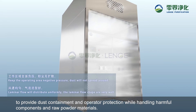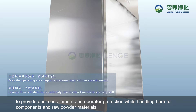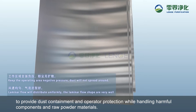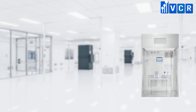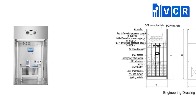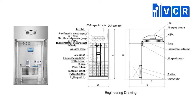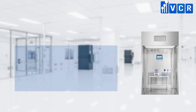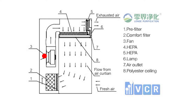The aim is to provide dust containment and operator protection while filling, weighing, sampling harmful components, and raw powder materials. The dispensing booth has a stainless steel structure with main components including a pre-filter, fine filter, HEPA filter, differential pressure gauges for the pre-filter, fine filter, and HEPA filter, lamp, fan, SOP, DOP ports, and power sockets.